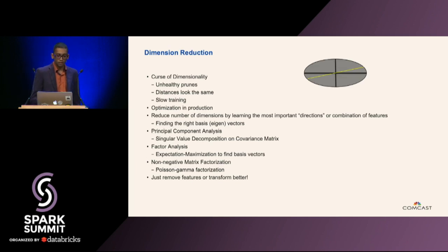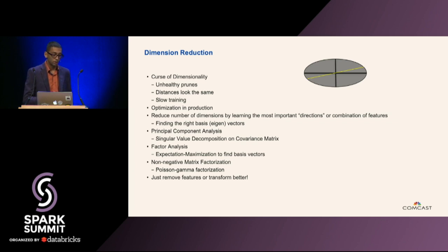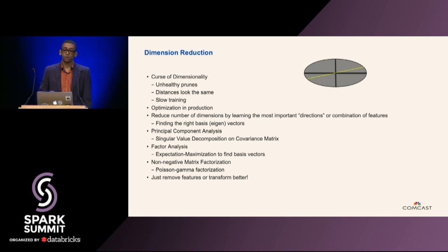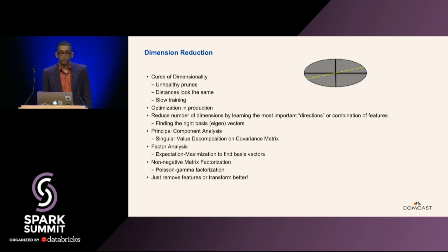Let's say you have everything optimal — your features are cleaned and transformed — but you have too many of them, and this leads to problems in production or training you didn't anticipate. For example, if you have too many features and you're training decision trees or gradient boosting machines, you can have unhealthy pruning — this is why one-hot encoding is sometimes not optimal for decision trees. Sometimes with a lot of features you run into the curse of dimensionality, with distances all looking the same. If you have more features, that's just more parameters for a model to fit, which can slow down training — not a problem for the first batch, but what if you need to retrain a model in production and deploy it relatively quickly?